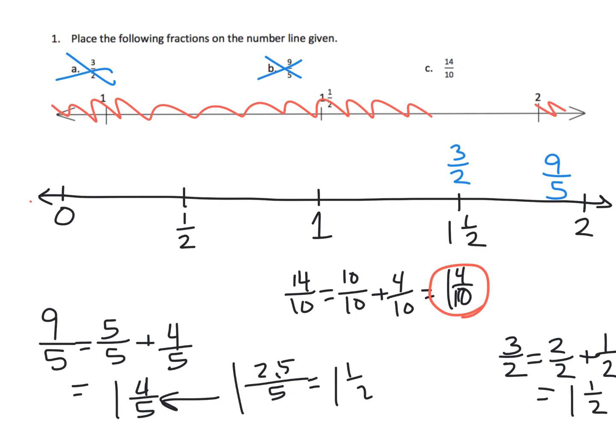Because 5 tenths is a half, so we know that 14 tenths has to be slightly less than 1 and a half. Where exactly should it go? It doesn't matter. But now that we have our general placements based on our benchmarks of these fractions, we can now compare them. Because remember, fractions to the right are larger than fractions to the left.